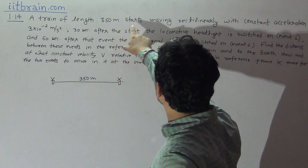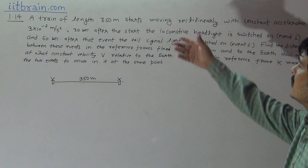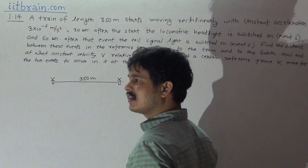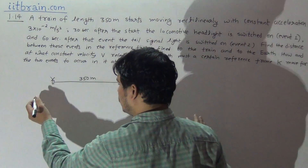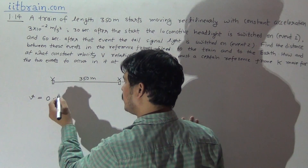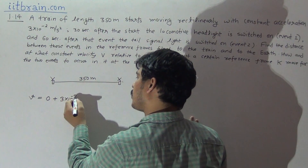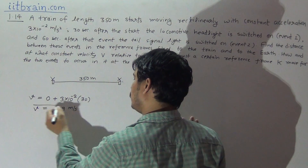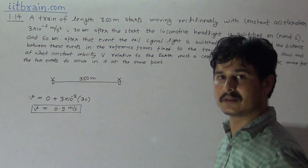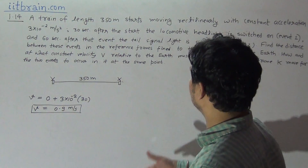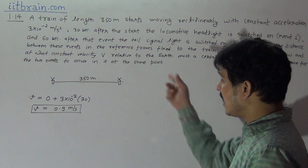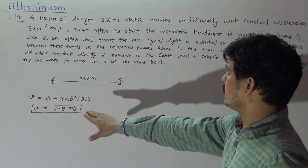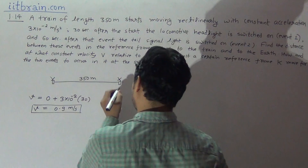The train of length 350 meters starts moving with constant acceleration 3×10⁻² m/s². 30 seconds after the start, the locomotive headlight is switched on. In these 30 seconds the train builds up a speed: v = u + at = 0 + (3×10⁻²)×30 = 0.9 meter per second. So when the locomotive headlight is switched on at Event 1, the velocity of the train is 0.9 meter per second.